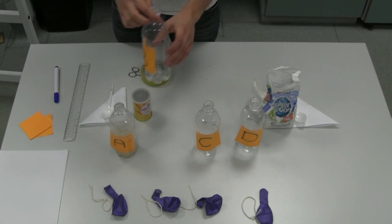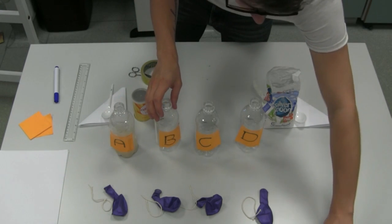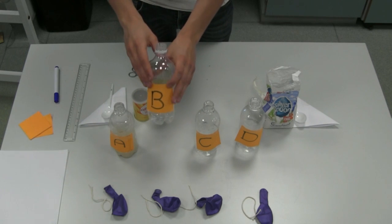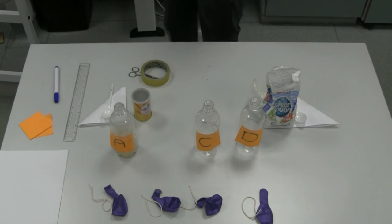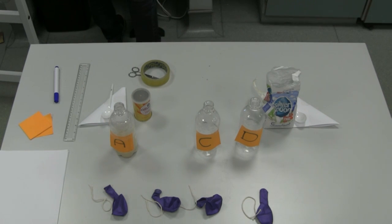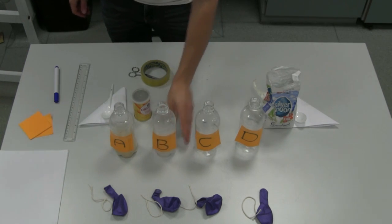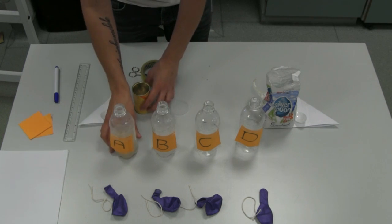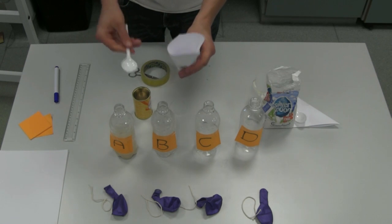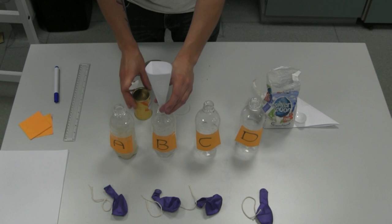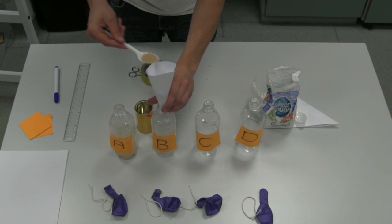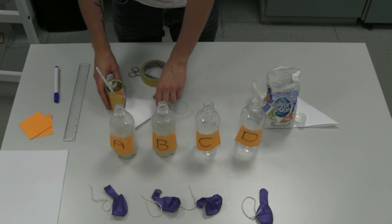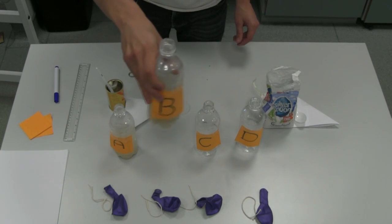With bottle B, we're not going to include any sugar. So we need to add water up to the 7cm mark, and using your spoon and funnel that you used for the yeast, proceed to add the yeast. And give bottle B a mix.